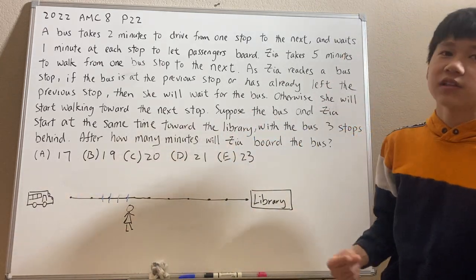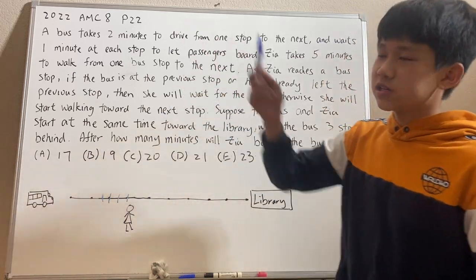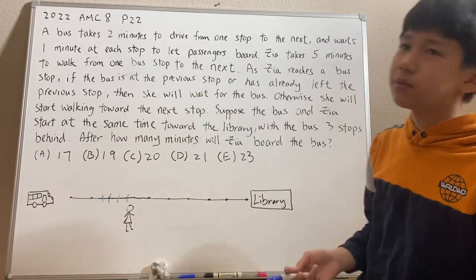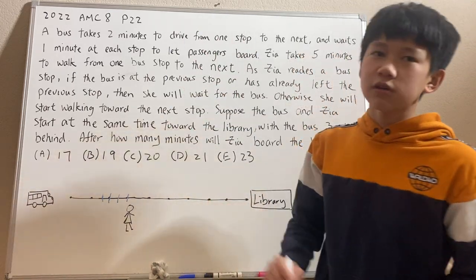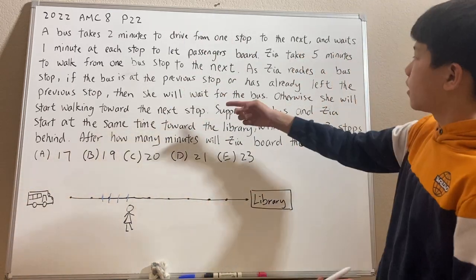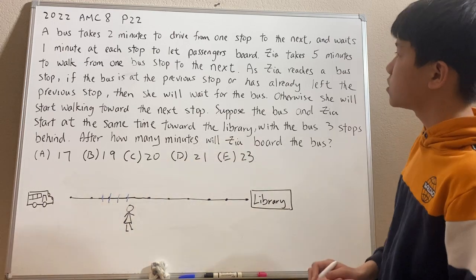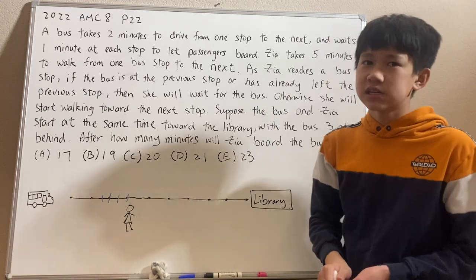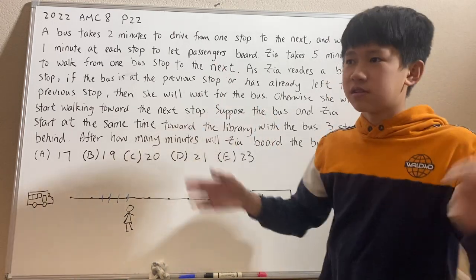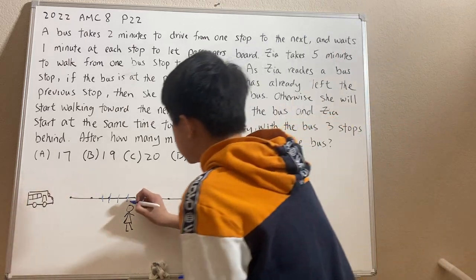Now that we have the constraints clear, let's just start bashing it, since the numbers don't seem very big. We're going to be doing the bashing in Zia's units of time — since Zia takes five minutes per stop, those time units are much easier to work with.